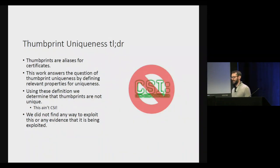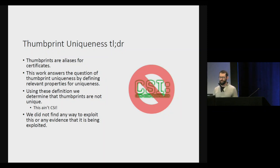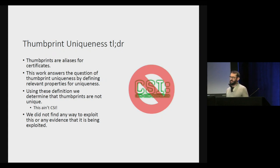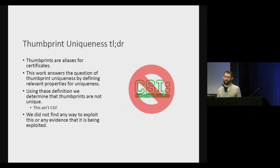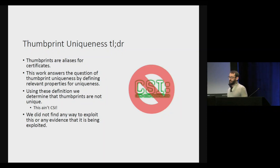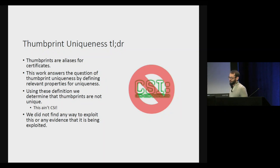This work answers the question of certificate uniqueness, first by defining the properties we'd want for uniqueness and then using these definitions to determine that thumbprints are not, in fact, unique. Two properties are defined: U1 — no two different certificates should have the same thumbprint — and U2 — a thumbprint should uniquely identify a certificate. The TLDR is: thumbprints are not unique. We didn't find any way to exploit this or evidence it was being used in practice.